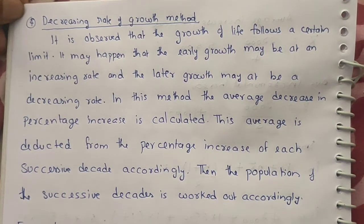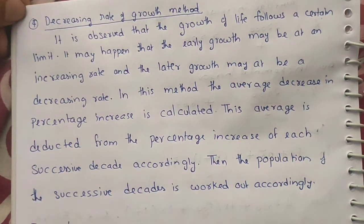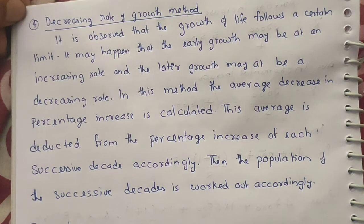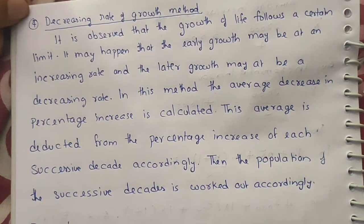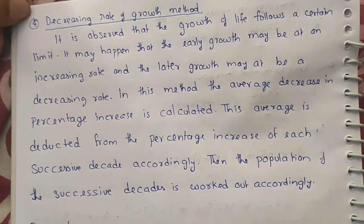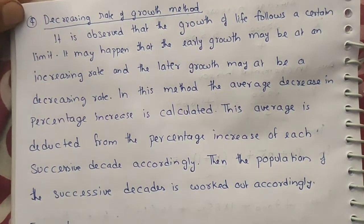What is the decreasing rate of growth method? It is observed that the growth of life follows a certain limit. It may happen that the early growth may be at an increasing rate and the later growth may be at a decreasing rate.